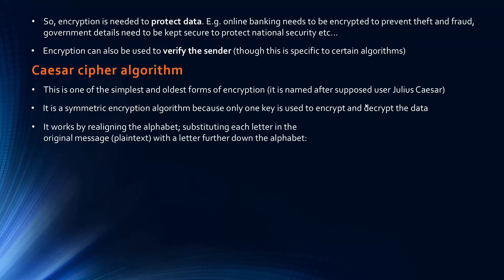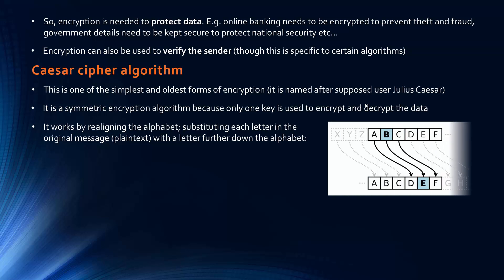What the Caesar cipher does is work by realigning the alphabet. It substitutes each letter in the original plain text message with a letter further down the alphabet. So for example, in this illustration, A becomes D and B becomes E — all the letters are moved down three positions.